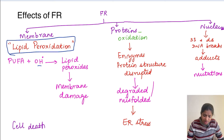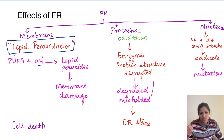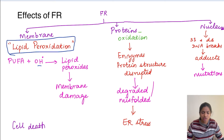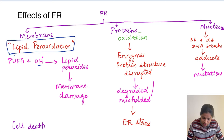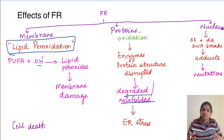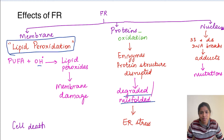In proteins, free radicals oxidize proteins, and oxidized proteins cause damage. For example, enzymes are proteins - their active sites get damaged, making enzymes inactive and unable to function normally. The secondary and tertiary structure of proteins is also damaged, resulting in misfolded proteins which undergo degradation, leading to protein loss. Accumulation of misfolded proteins leads to stress on the endoplasmic reticulum, called endoplasmic reticulum stress.